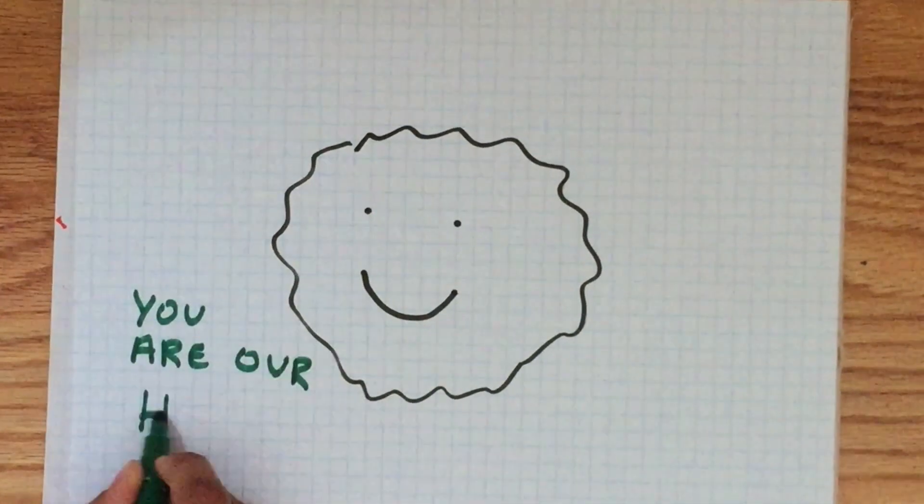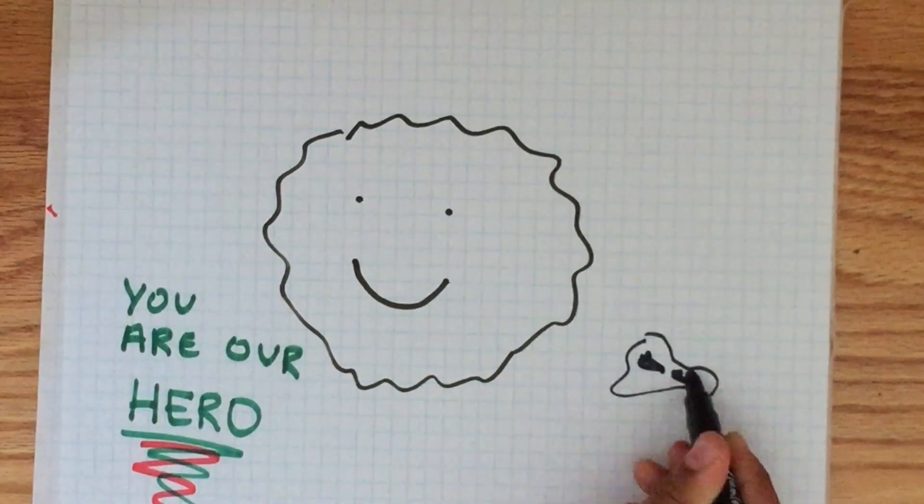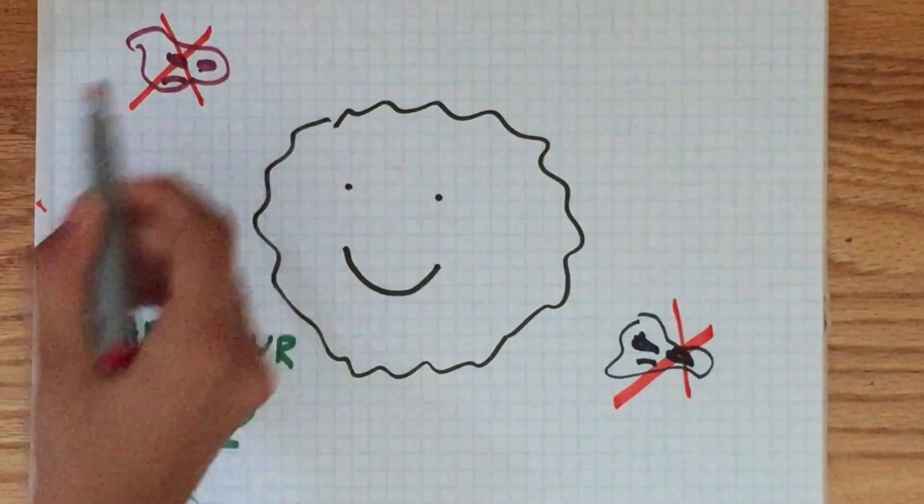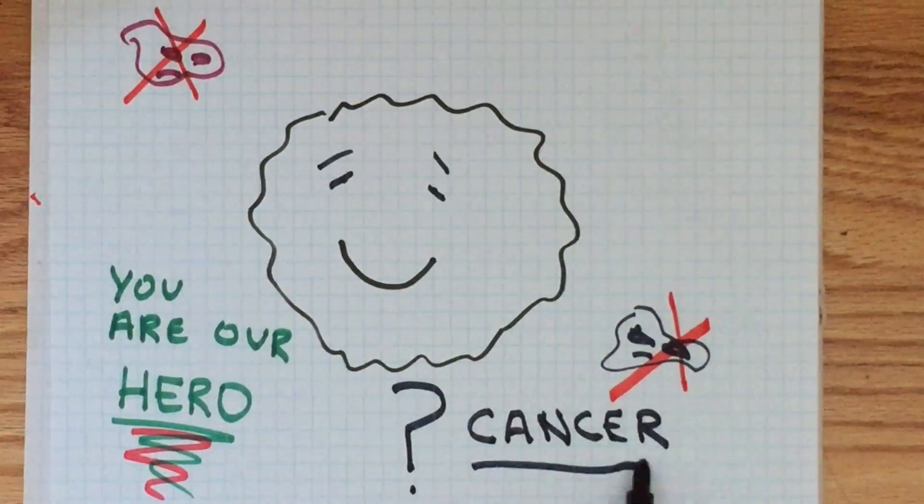In fact, T-cells are the ones that make sure we don't all have cancer by keeping defective cells at bay. If this is the case though, why do people still get cancer?